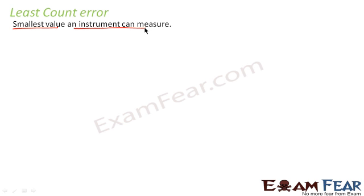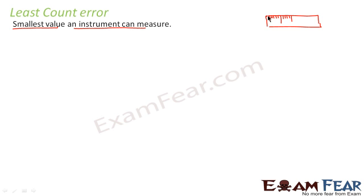If you observe that scale, there would be divisions. This is the smallest division that your scale can measure. There are no subdivisions inside this. Now, if you want to measure the length of an object which is lesser than this small division, then you cannot measure that with your meter scale. So this division is the least count — the smallest value that your meter scale can measure.